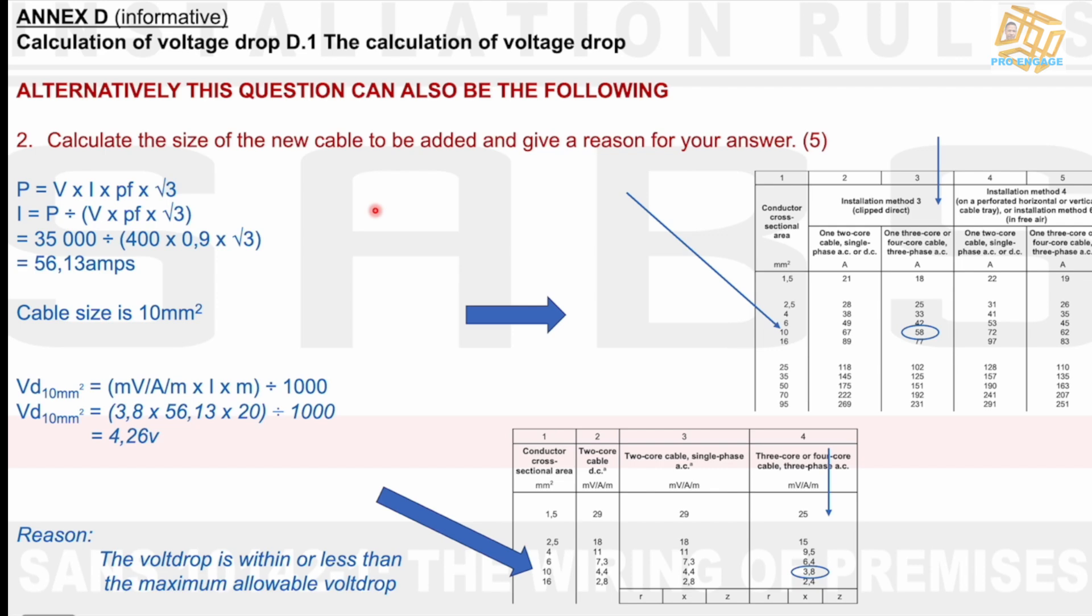Alternatively, if we wanted to use the information of 0.9, the power factor, this is what we would have come up with, is that the formula would look almost the same, which would be P equals V times I times the power factor times square root 3. Now, just in short, power factor is also the cos theta. So if I had an angle, then I would say it is cos the angle, and it would be the 0.9. So I manipulate this formula, and I say I equals P divided by V times the power factor times square root 3. I inject my values, and I get 58.13 amps.